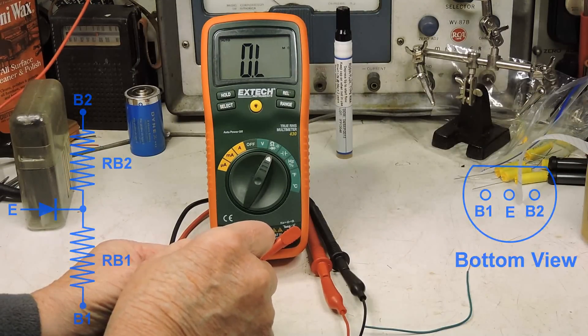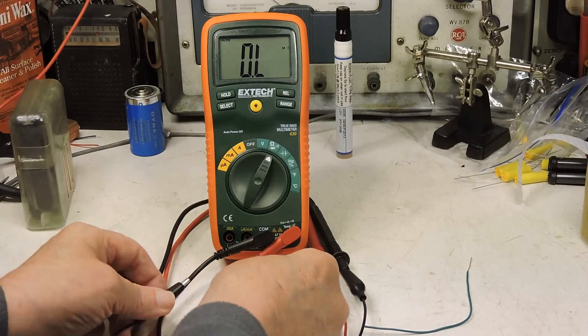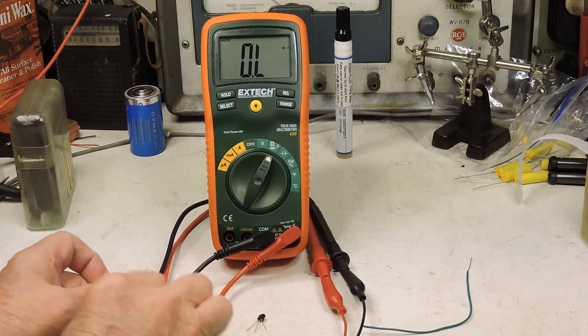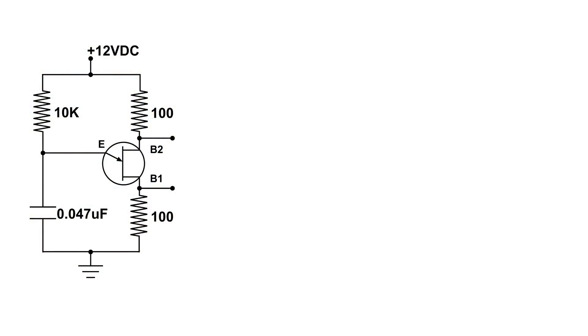So that's what a unijunction transistor looks like and tests correctly with an ohmmeter. Unijunction transistors are used in circuits sometimes to fire SCRs, and quite often, like in this circuit, it's an oscillator. This is a very common circuit for a unijunction transistor.